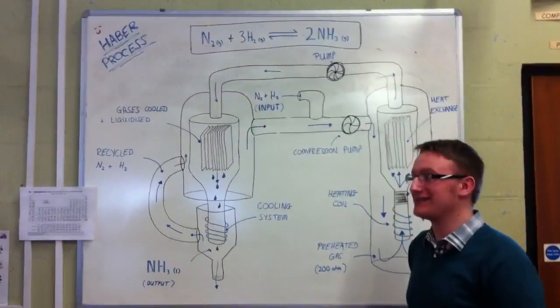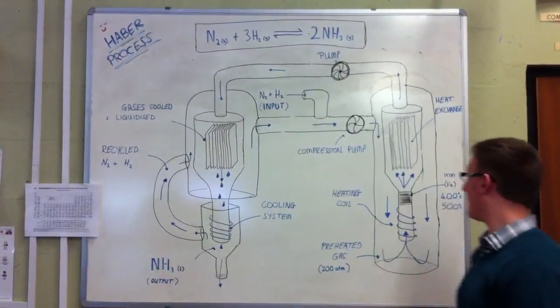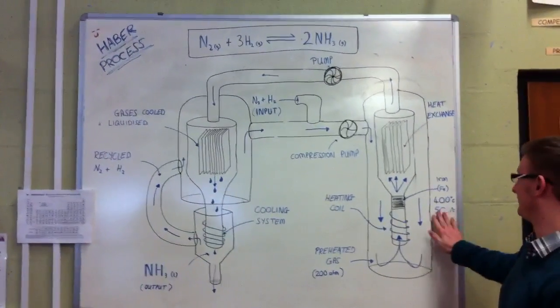it works slowly because there's less collisions. So we have to reach a compromise, and that compromise is about 400 degrees.